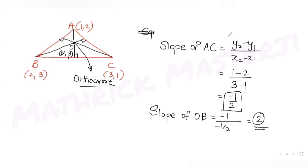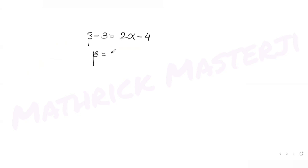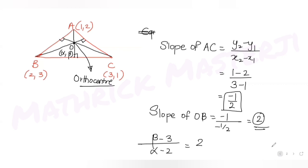Using the slope of OB, I get (beta - 3)/(alpha - 2) = 2. Solving this gives beta - 3 = 2 alpha - 4, so beta = 2 alpha - 1. I now have beta in terms of alpha.